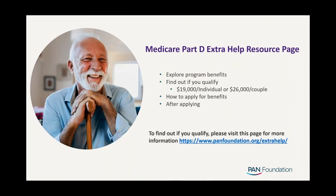We recently put together an excellent resource explaining the Extra Help program — its benefits, requirements, and application process. The Extra Help program helps limited-income patients pay Medicare prescription drug costs and can dramatically reduce out-of-pocket costs, especially if you take multiple medications. There are two levels of coverage: full and partial. People eligible for full Extra Help are automatically enrolled, but those eligible for partial Extra Help must apply to receive benefits. To find out if you qualify, please visit PanFoundation.org/extrahelp.